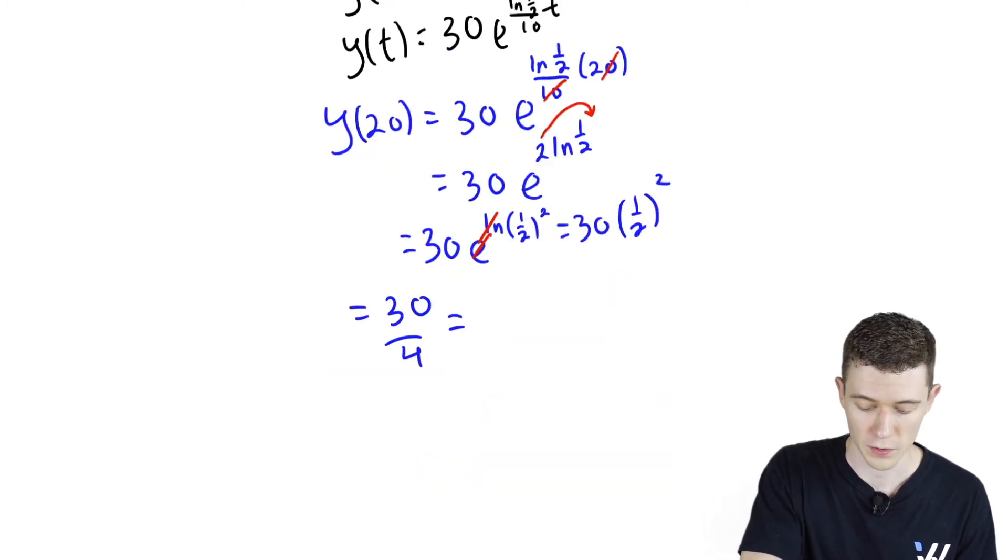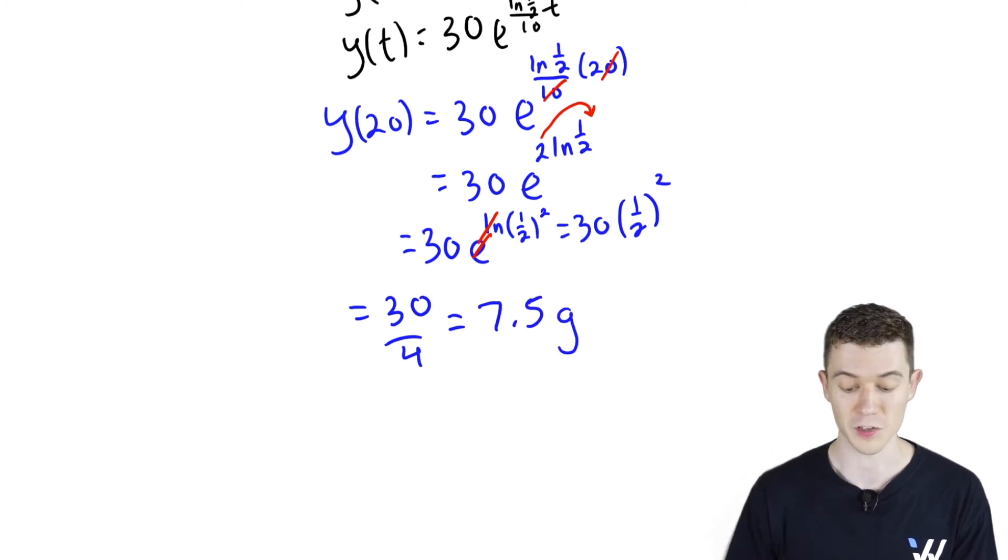We'll just get 30 times one half squared. One half squared is a fourth. 30 over 4 looks like 7.5. Our weight was measured in grams.